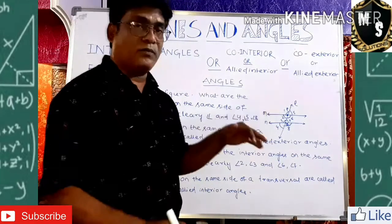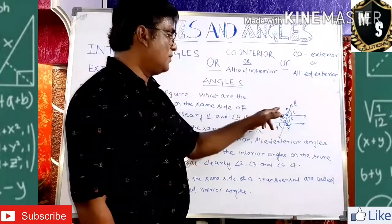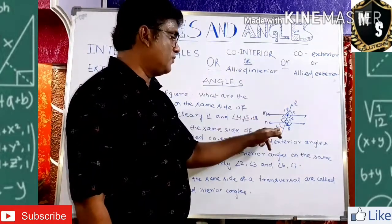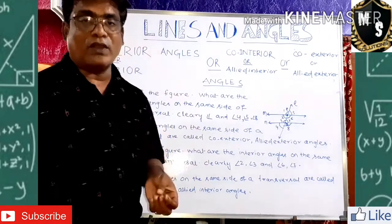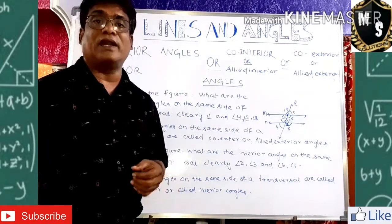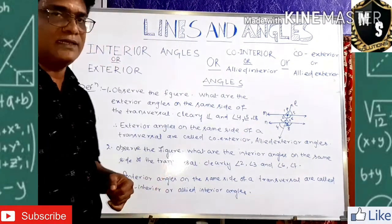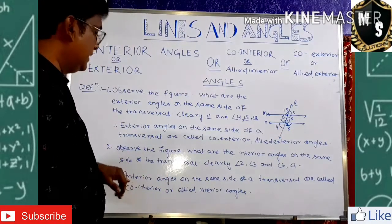So to summarize: exterior angles on the same side of a transversal are called co-exterior or allied exterior angles. Angles 1 and 4 are co-exterior or allied exterior angles.